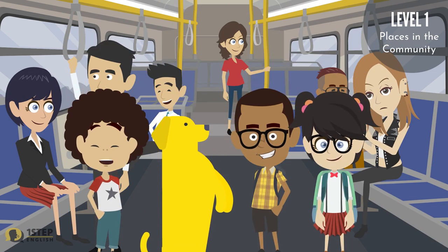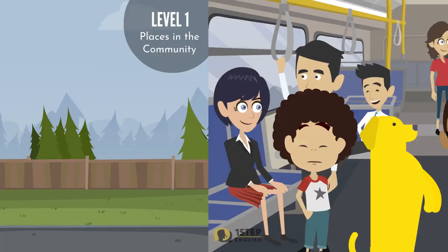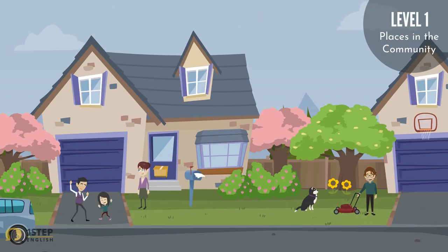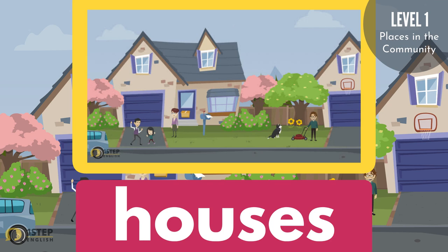Here are some examples. Houses — this is where you, your family, and the entire neighborhood live.